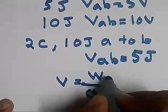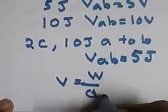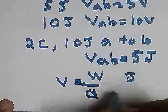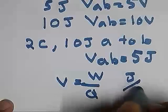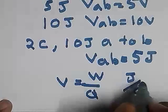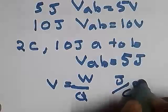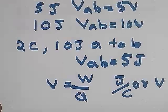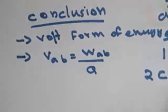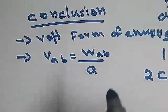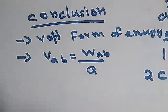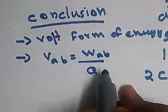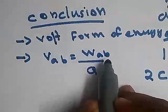Here W is the work done and Q is the charge. Work done has units of joules and Q has units of coulombs, so voltage has units of joules per coulomb, or we can express it as volts. We have two conclusions about voltage: voltage is a form of energy, and voltage between two points A and B is defined as the work done to bring one coulomb of charge from A to B.